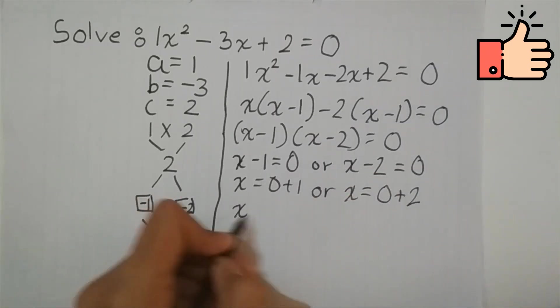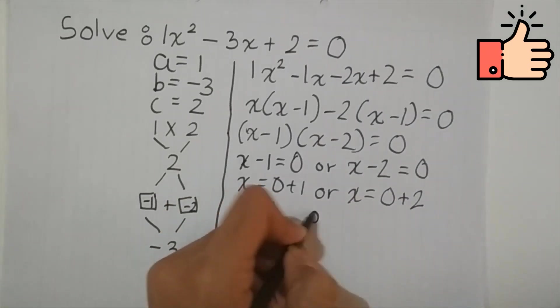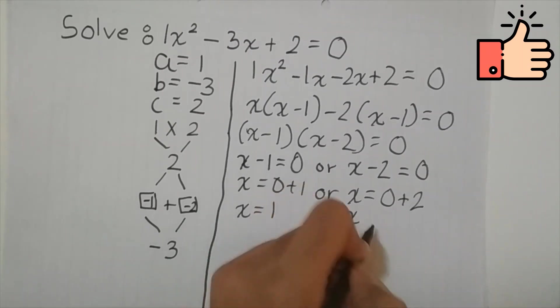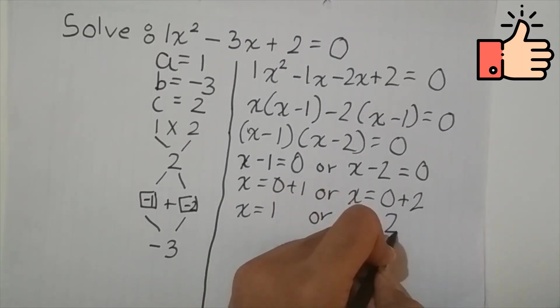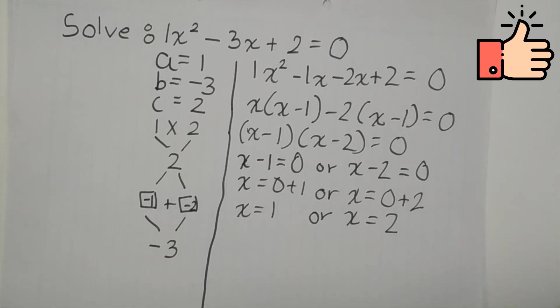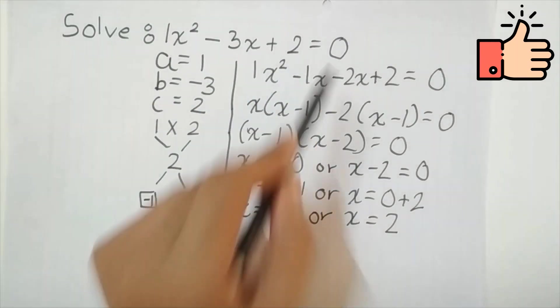So x can be 0 plus 1 or it can be 0 plus 2. So x is equal to 1 or x is equal to 2. And both of these answers fit exactly correct into this equation right over here.